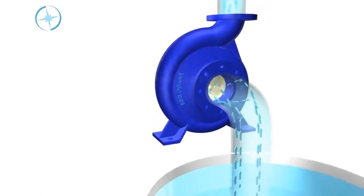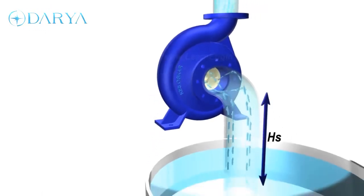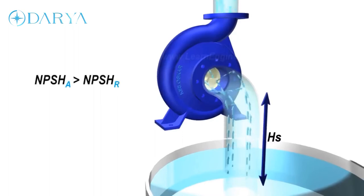More the suction head, lesser should be the pressure at suction side to lift water. This fact puts a limit to maximum suction head a pump can have. Careful pump selection is required to avoid problem of cavitation.